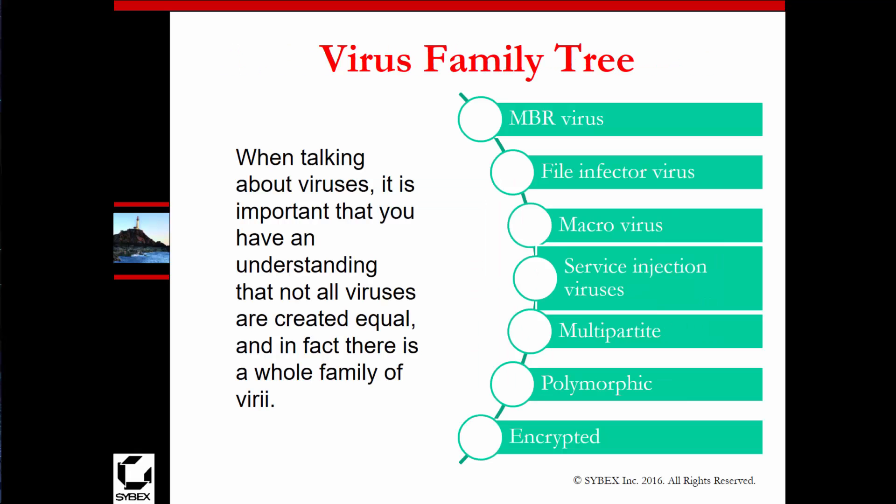Let's look at the virus family tree. We have MBR-type viruses that infect the master boot record, file form viruses, viruses that infect macros — common macros could be like Office programs — and service injection viruses that inject themselves into services. There are also multipartite and polymorphic viruses. Polymorphic is adaptive — malware that has the ability to change its code and propagate, versus malware that doesn't. And then there are encrypted viruses, which use encryption just like any computer program could.